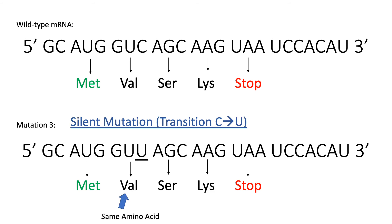He classifies the third mutation as a silent mutation, since the mutation still encodes for the same amino acid as the wild type. This is classified as a transition, as it only involves a pyrimidine to a pyrimidine change — cytosine to uracil.